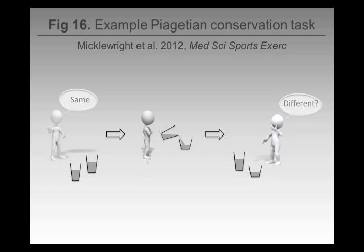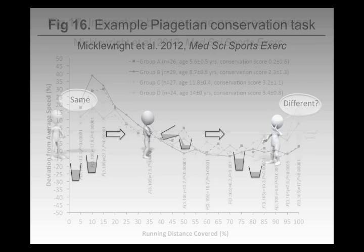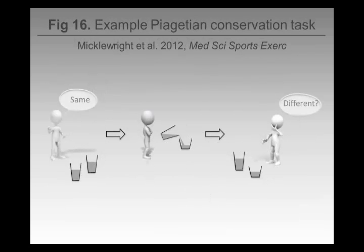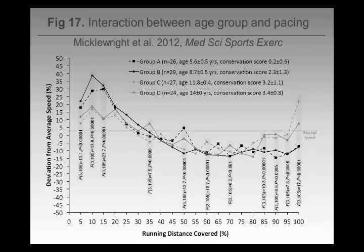Younger children can't do this — they just see a different size and say it's a different amount of water. One version we did was two pieces of string in a line, and then we made one into the shape of a running track. Young children would often say 'that's shorter now than the line.' The purpose was to classify these kids according to their conservation ability.